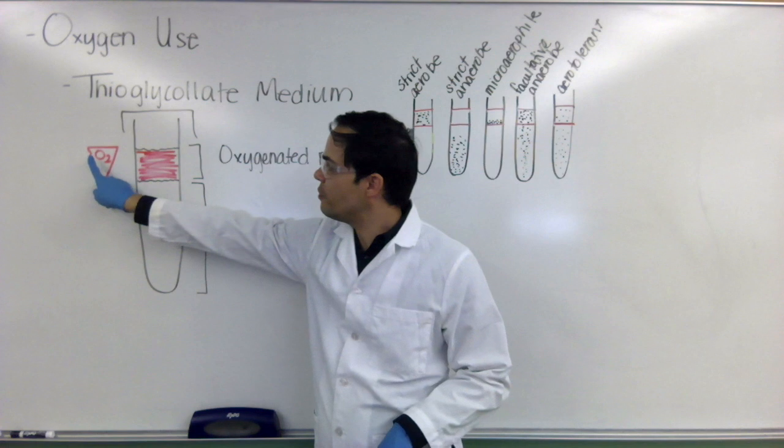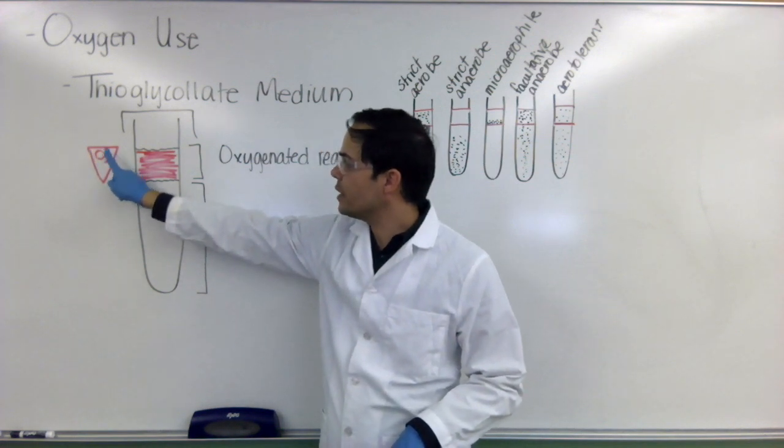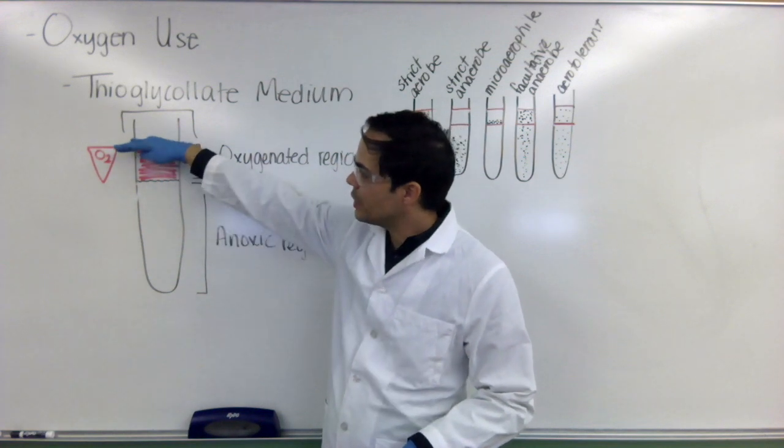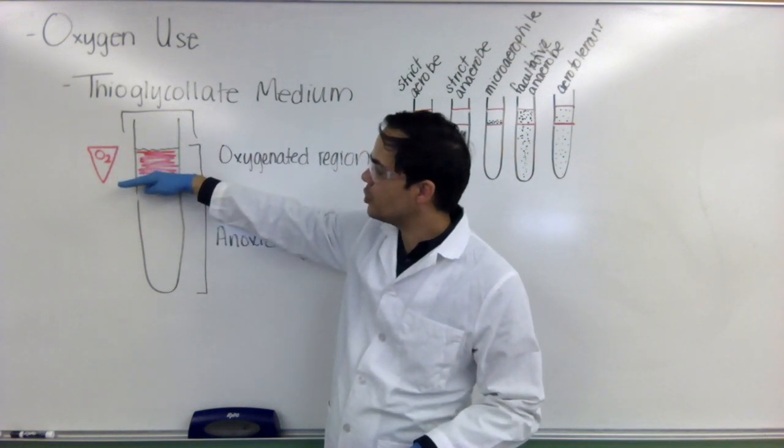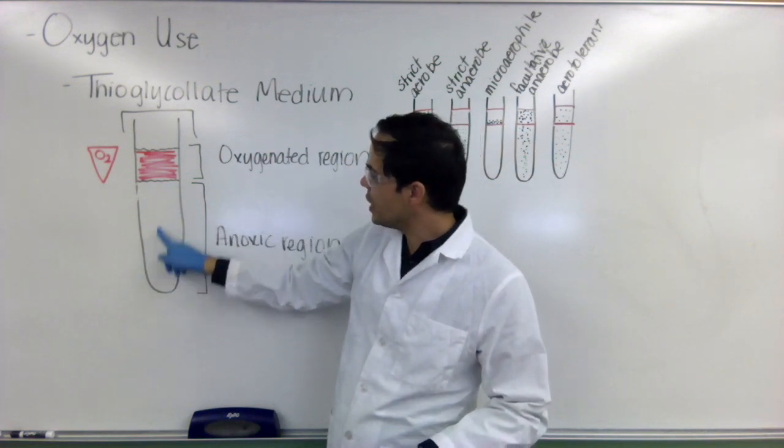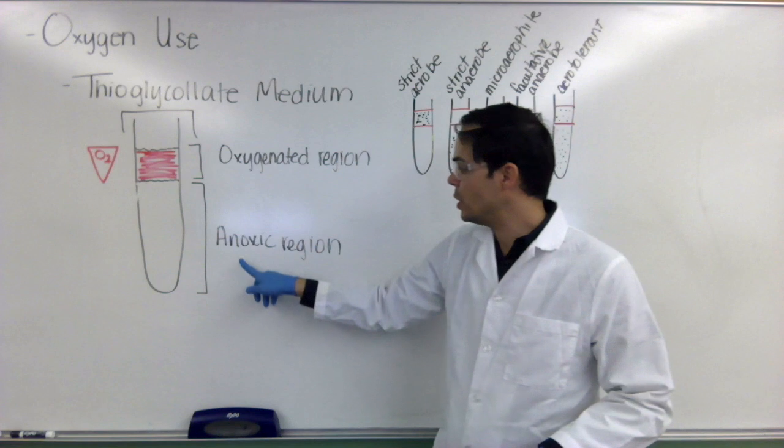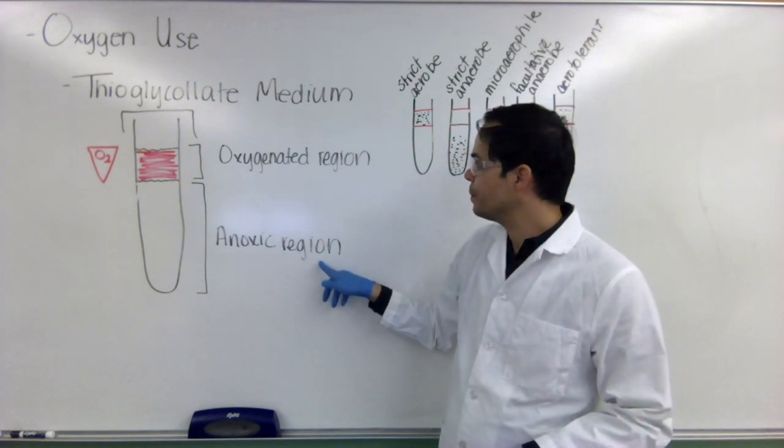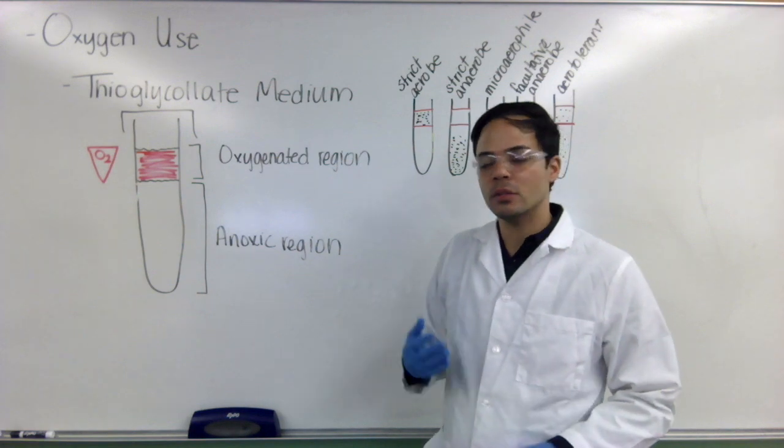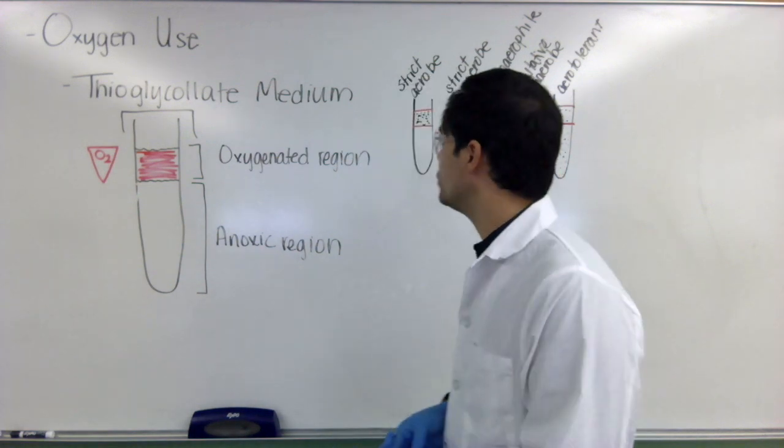So basically what forms is an oxygen gradient in the upper part of the tube whereby oxygen is going to be less concentrated as we move down the tube and eventually there will be a region here that has no oxygen called the anoxic region and this region up here is the oxygenated region where the oxygen can actually penetrate into the tube.